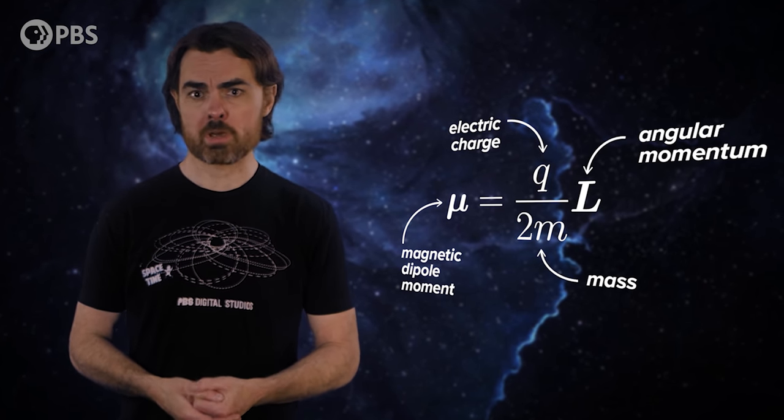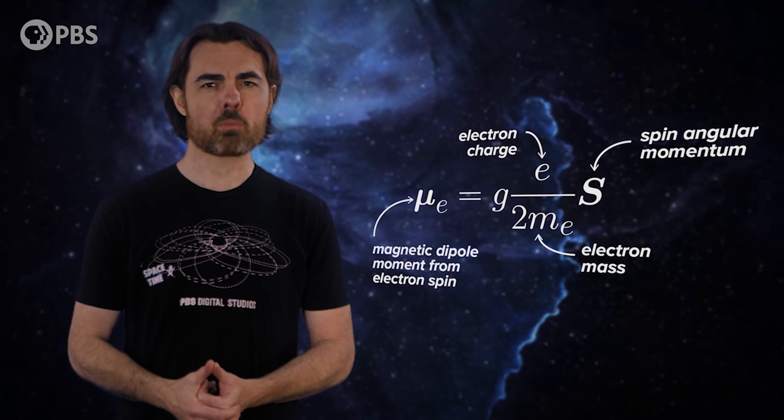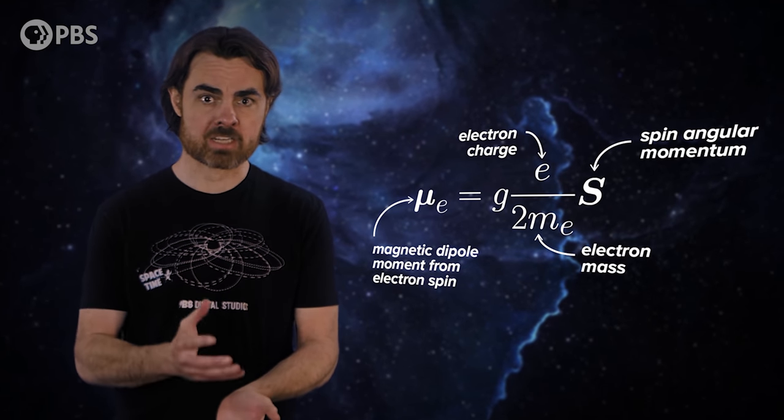An electron also has a dipole field and a dipole moment, which depends on the electron spin, charge and mass. But the electron dipole moment is different from the classical one by this factor g.